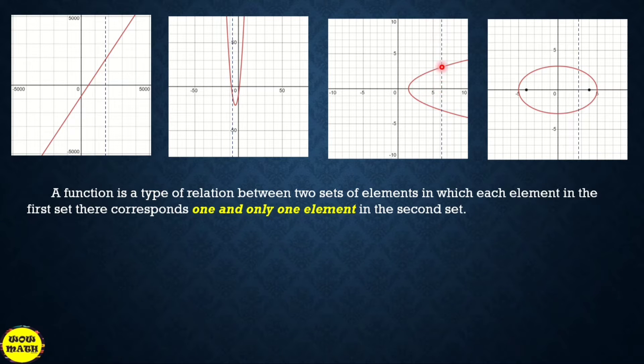But this one, mayroong dalawang y value kasi. Let's say for example, itong x value na nandito, dalawa yung correspond niya na y value. And also, the set of x values is called the domain. And then, the set of y values is called the range. So review lang yan.